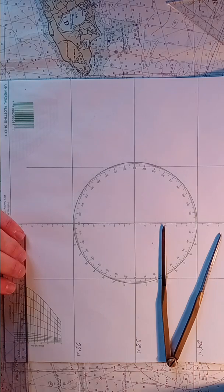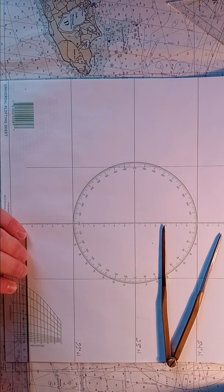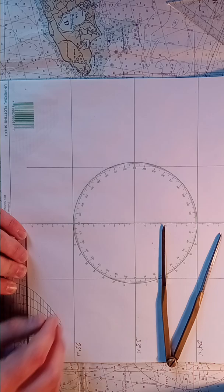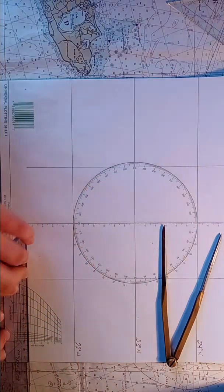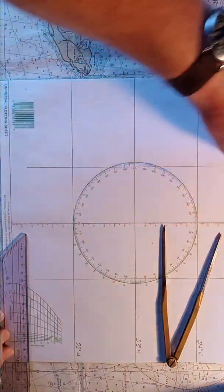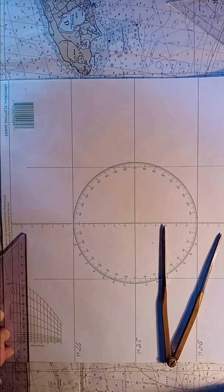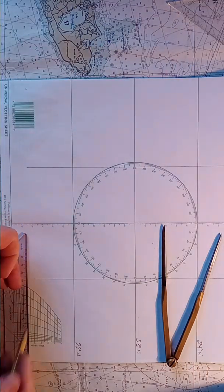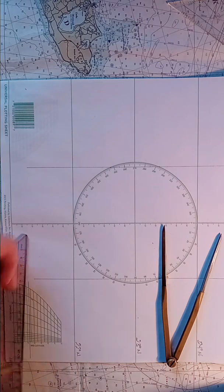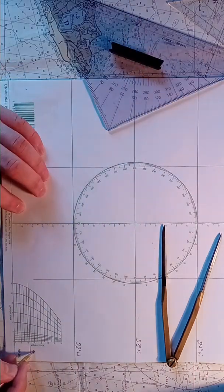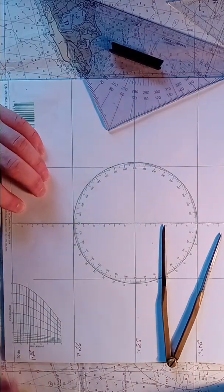Lay it down so that both points touch the lines on that part there. Take your triangle, line it up. Find your pencil and lay down your line. Label that so you don't get confused.